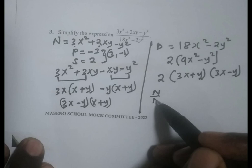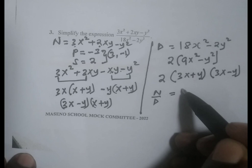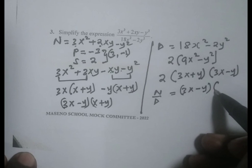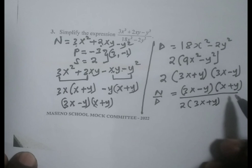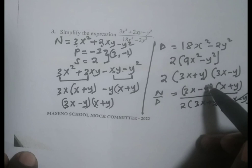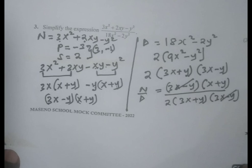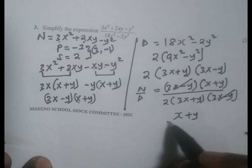We have the numerator as 3x minus y. 3x minus y and 3x minus y cancel. This gives us x plus y divided by 2 into 3x plus y.